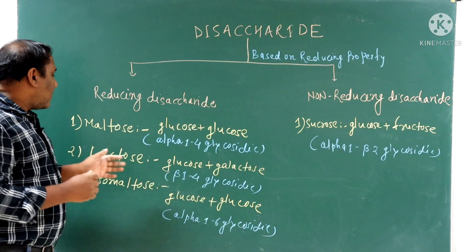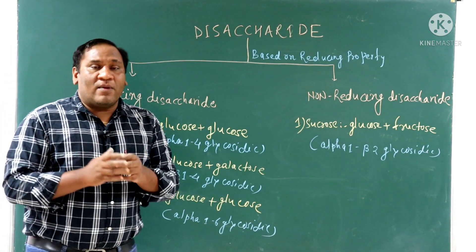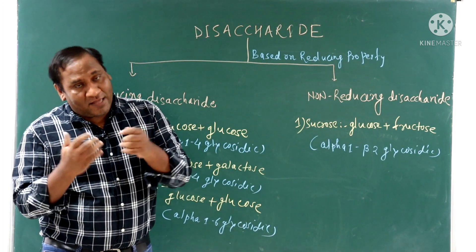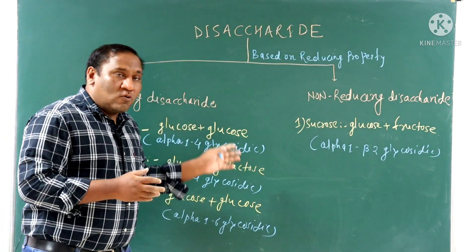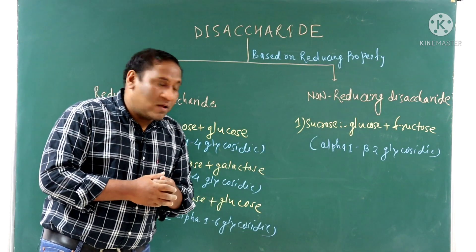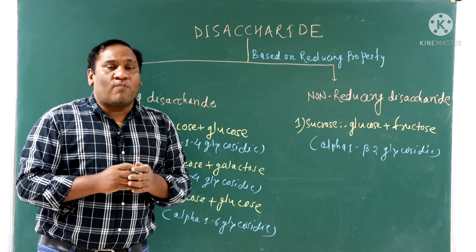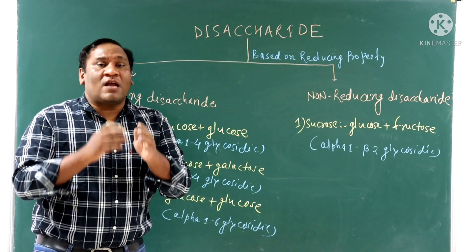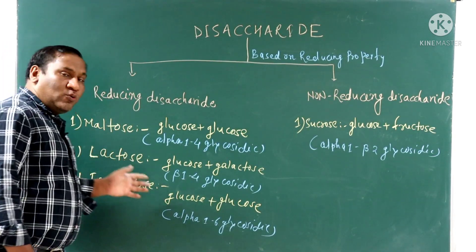Examples of reducing disaccharides: first, maltose; second, lactose; third, isomaltose. Maltose is an intermediate metabolic product of starch digestion by alpha-amylase enzyme. It contains glucose plus glucose joined by an alpha-1,4 glycosidic bond. Maltose reacts with phenylhydrazine to form maltosazone, producing sunflower-shaped crystals. Lactose is known as milk sugar.